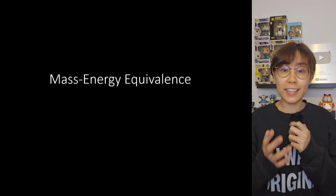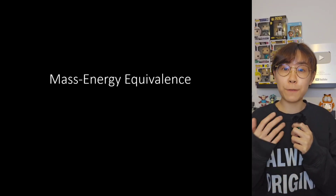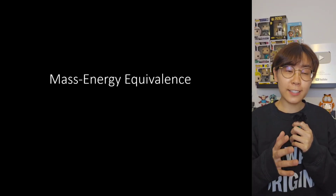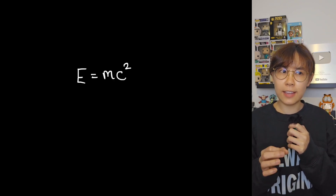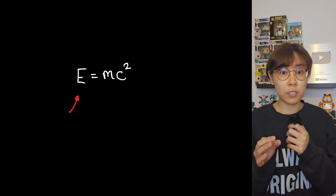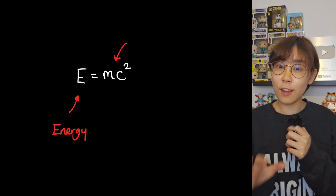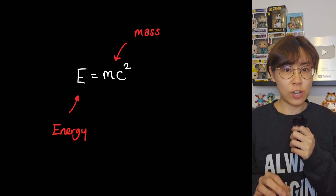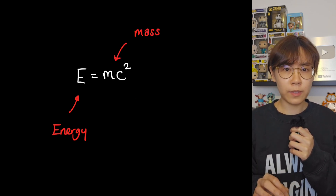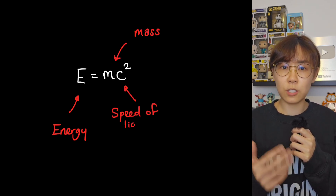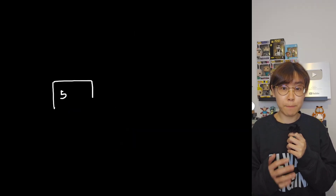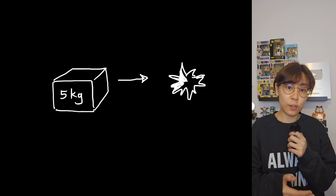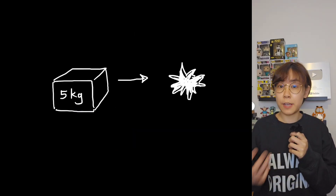Here's the simplest way to understand Einstein's most famous equation. Einstein's mass-energy equivalence was famously encapsulated in his equation E equals mc squared. It tells us that energy and mass are interchangeable and they are related by the speed of light squared. This equation essentially tells us that mass can be converted into energy and vice versa.